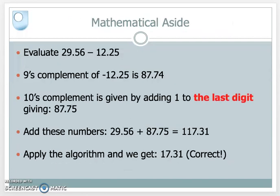As a mathematical aside, let's do the calculation 29.56 minus 12.25. The 9's complement: what do we add to minus 12.25 to bring each digit up to 9? We add 4 to the 5, 7 to the 2, 7 to the 2, and 8 to the 1. The 10's complement is given by adding 1 to the last digit, so 87.74 becomes 87.75. Add the two numbers together — the answer is 117.31. Apply the algorithm: knock off the leading 1, and the final answer is 17.31, which is correct.